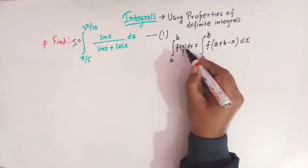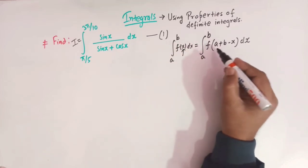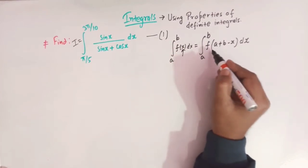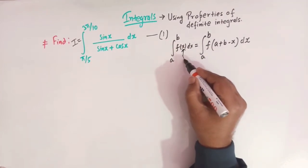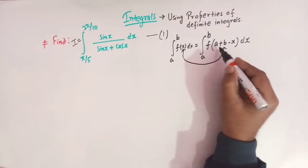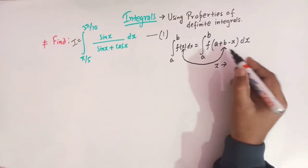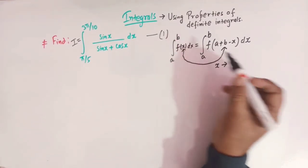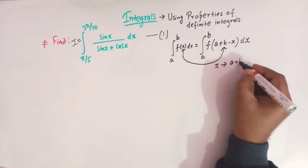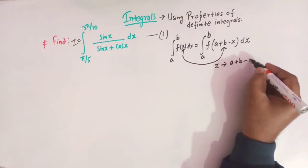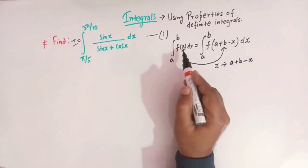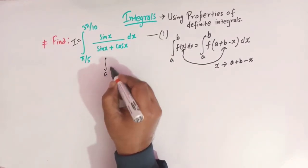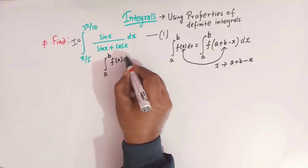Here we have the variable x, and in the next step — that is the integral from a to b of f(x) dx — what we do is we replace this x by a plus b minus x. That is, first we find out the sum of the lower limit and the upper limit, that is a plus b, and then we subtract x.